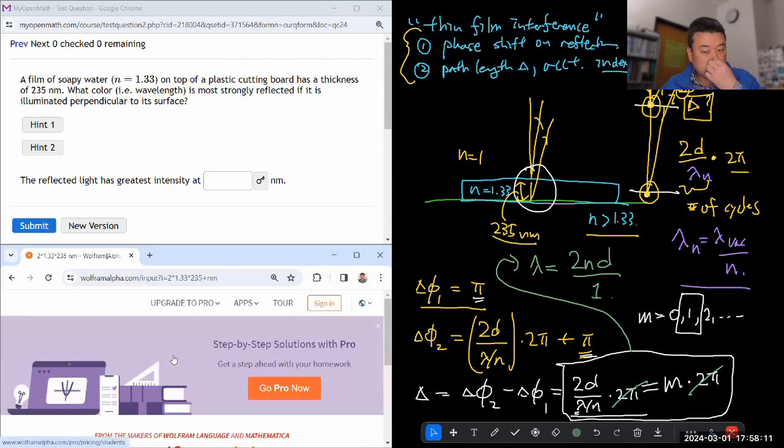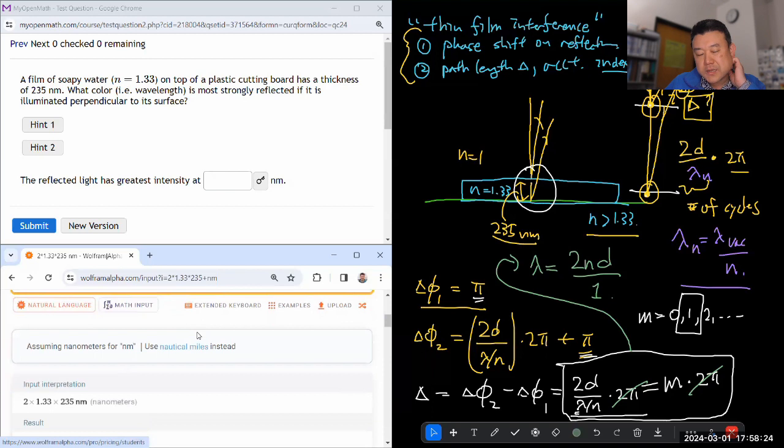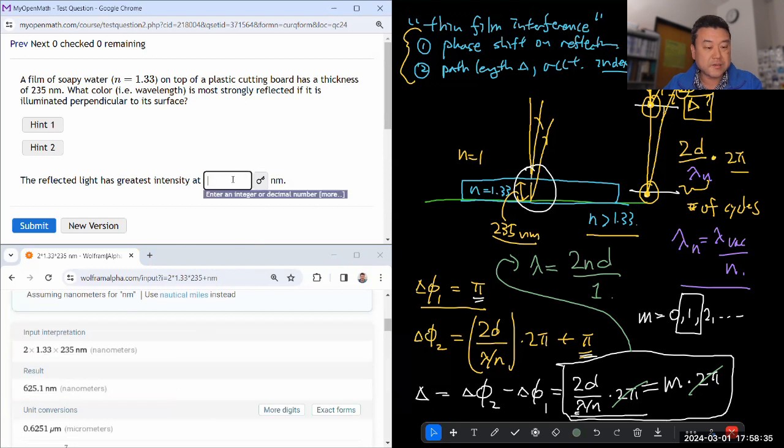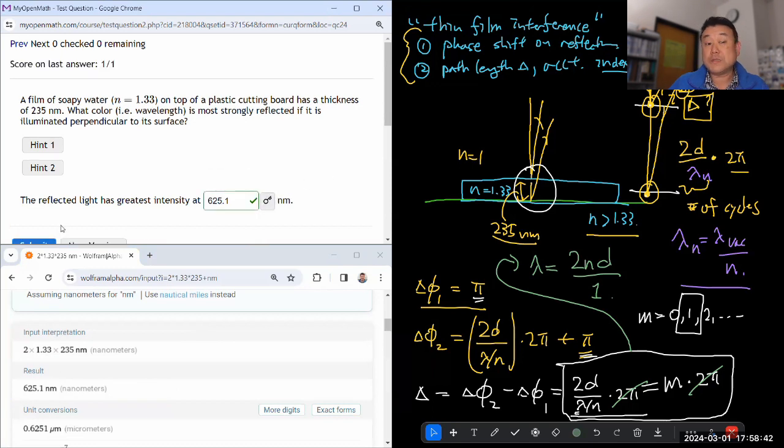Yeah, so that is the wavelength that would have first order, first order the interference maximum at that thickness. And what you are kind of assuming is the, all the other wavelengths would have less intensity. So, yeah, so I guess this is actually exactly that phrasing. Would it have greatest intensity at this wavelength, 624, 625.1 nanometer. Yeah, so that should be the answer.